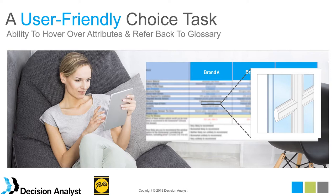We wanted to capture everything the homeowners might consider, and the glossary made the task more user-friendly. In the choice task, we gave participants the ability to hover over certain attributes using their mouse to get a more detailed definition. We actually received feedback at the end of surveys from respondents with comments about how easy the task was and how helpful it was to have these definitions during the choice task.